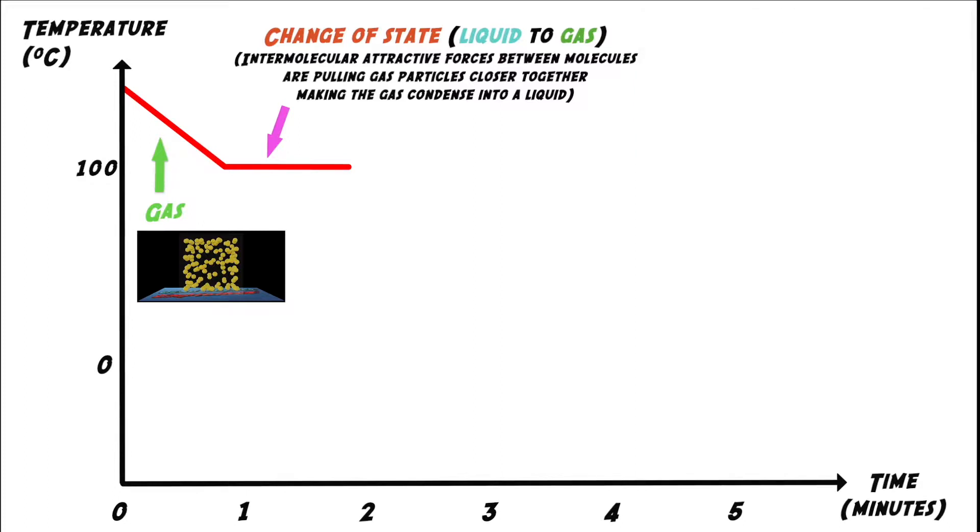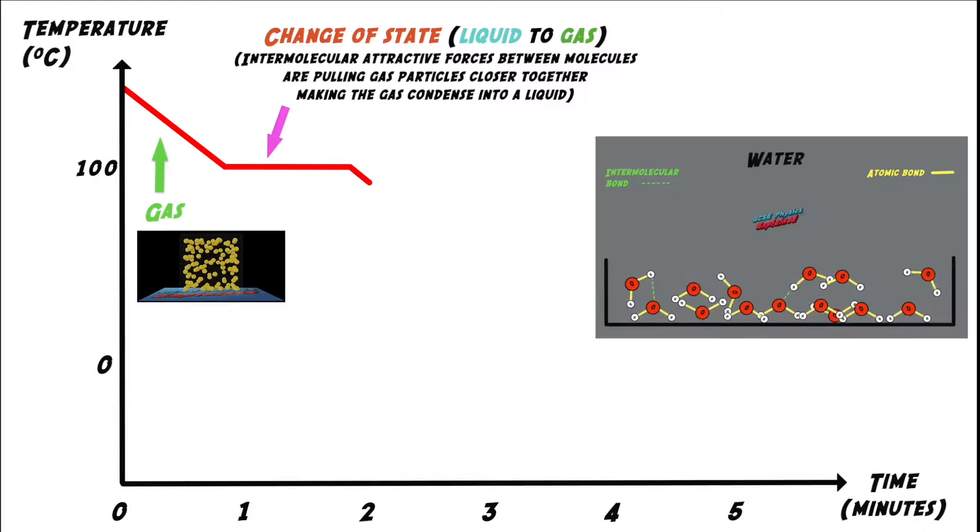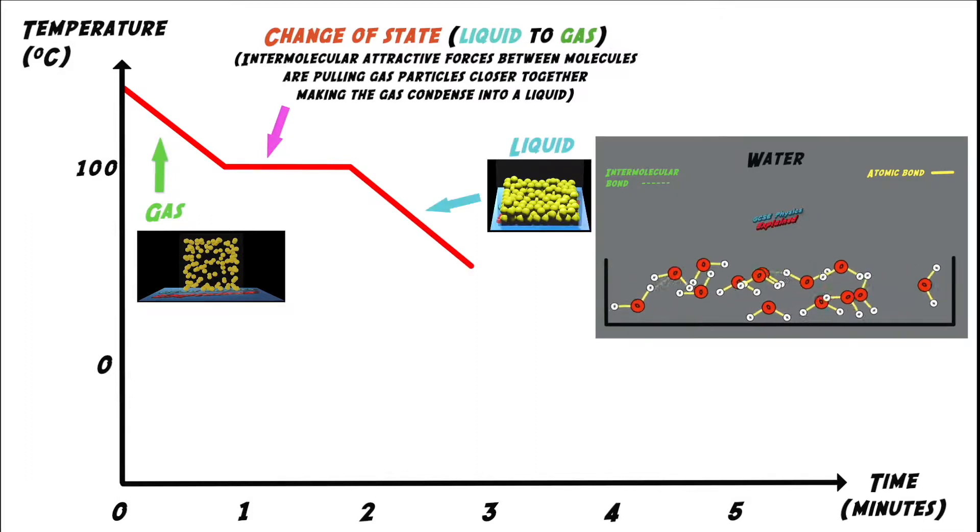This is seen on the graph as a flat section, as shown. Once all the gas has turned into a liquid, the temperature starts to decrease.